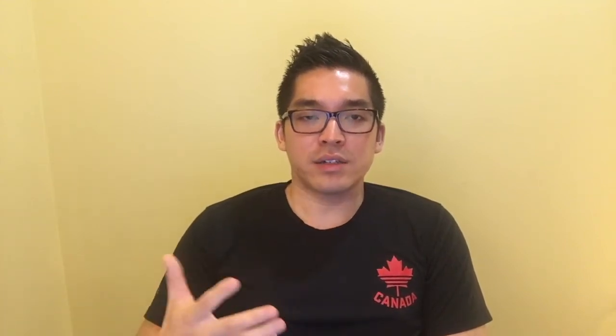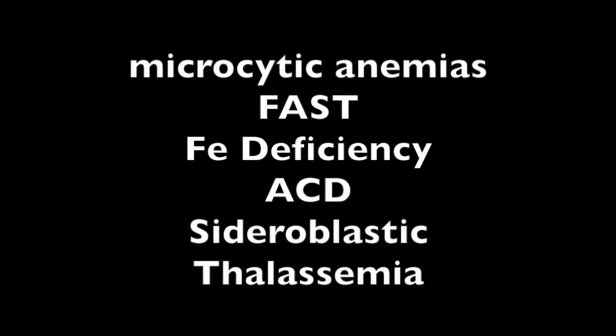The MCV can help you decide whether it's microcytic, normocytic, or macrocytic. Microcytic causes include iron deficiency anemia, anemia of chronic disease, sideroblastic anemia, or thalassemia. There are many normocytic differentials, and macrocytic causes most commonly include folate deficiency or B12 (cyanocobalamin) deficiency.